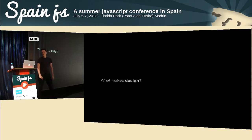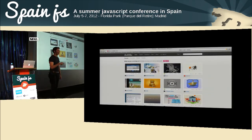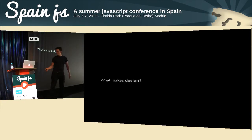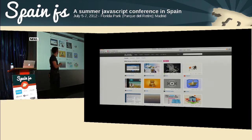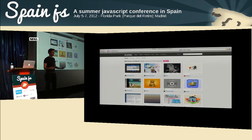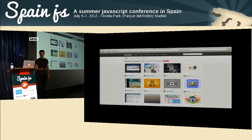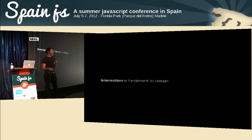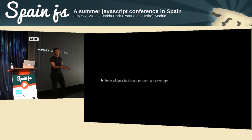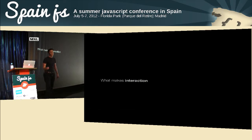What makes design? A friend of mine recently said Dribbble is the worst thing that ever happened to design. Dribbble is a site where you upload screenshots and comment, and designers love it. His point was that design and interaction are fundamental to each other — you can't separate the two — and Dribbble only shows pretty pictures, divorcing them. What makes up interaction?